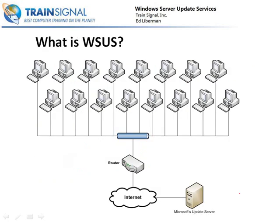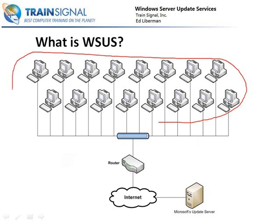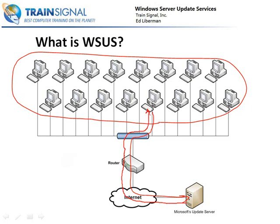What exactly is WSUS? On the screen here, I have a representation of what we used to have before WSUS. We would have large quantities of client computers who would each independently have to do a Windows Update and communicate with Microsoft's update server independently. For example, one client would have to go across our network, through the router, out to the Internet, and over to Microsoft's update server just to query for available updates. If there are updates available, the update server needs to not only communicate that, but download those updates back to the individual machine. Just doing that once can use up quite a bit of bandwidth — imagine having to do that with each and every client.